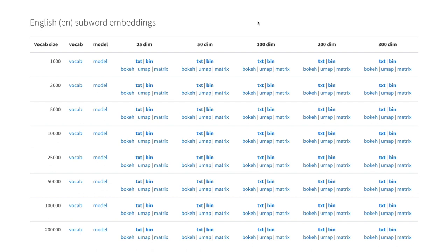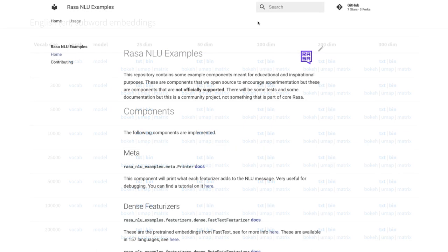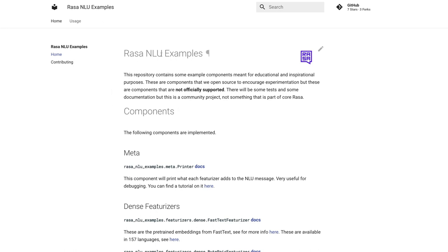But what we've also done is we've started an open source project where we allow byte pair as well as fast text embeddings to be used from Rasa. A while ago I started this Rasa NLU examples project with the goal that you can more easily try out different embeddings for different languages.